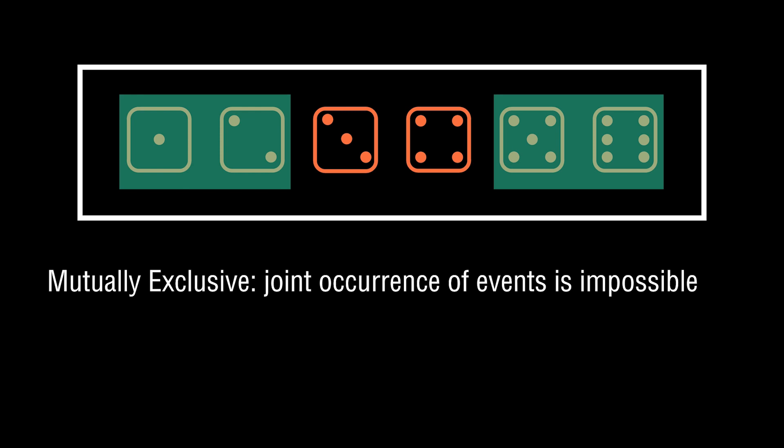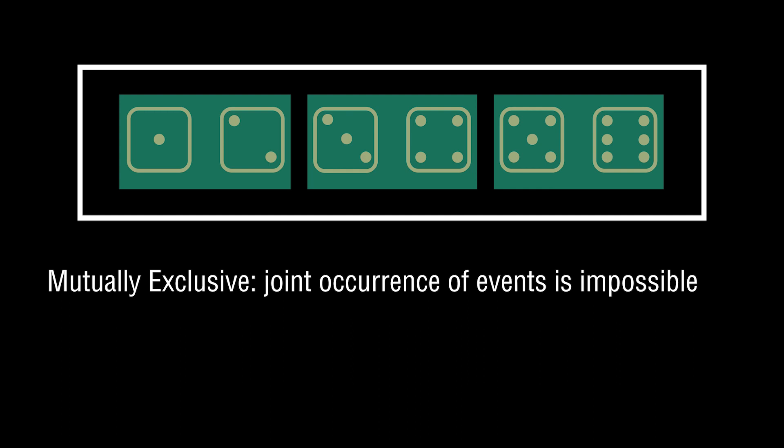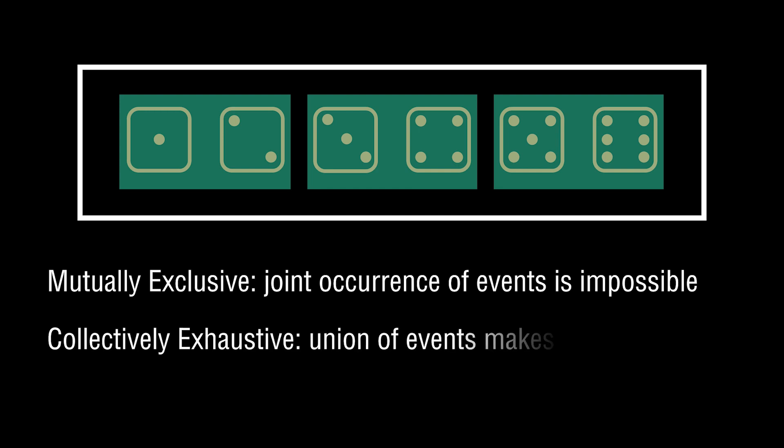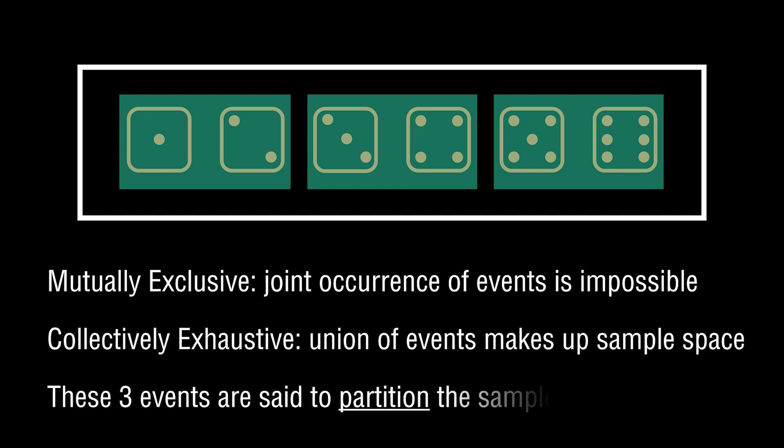If I roll a die, I either roll a one or a two, or I roll a five or a six, but the joint occurrence of those two is impossible. There's also an event I have yet to consider — rolling a three or a four. If I represent that as a third event, I have defined a series of events that go across my entire sample space. These events would be referred to as collectively exhaustive — the union of the events makes up the sample space.